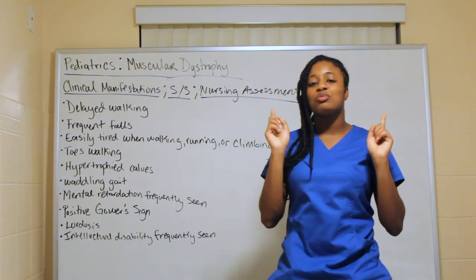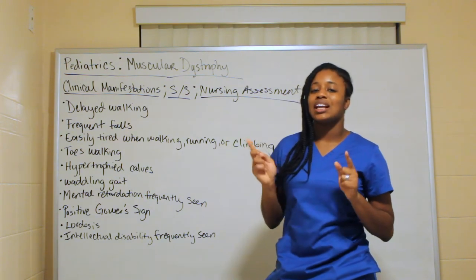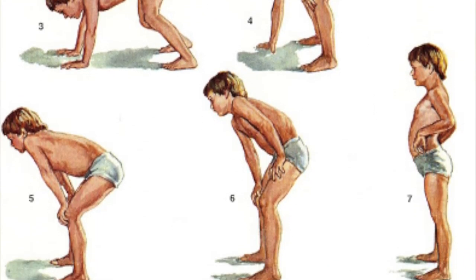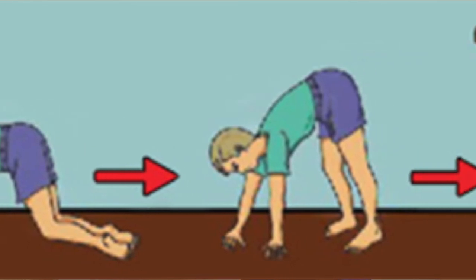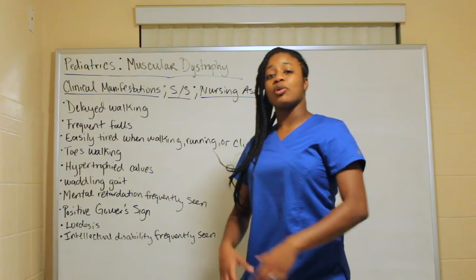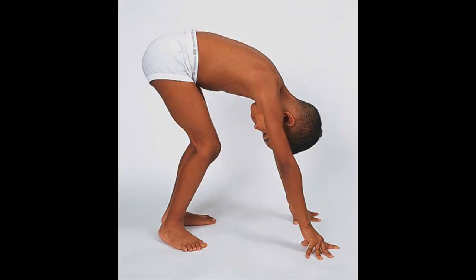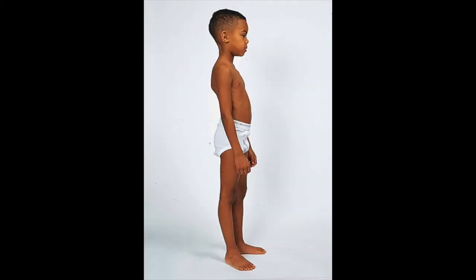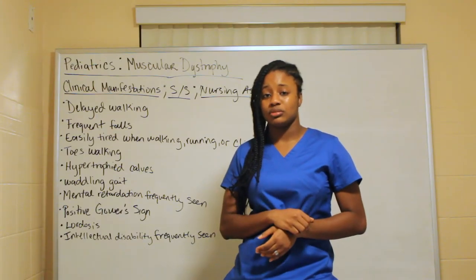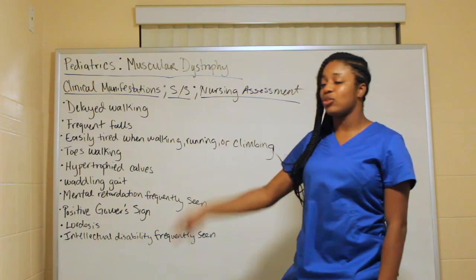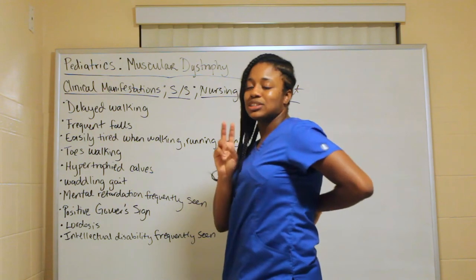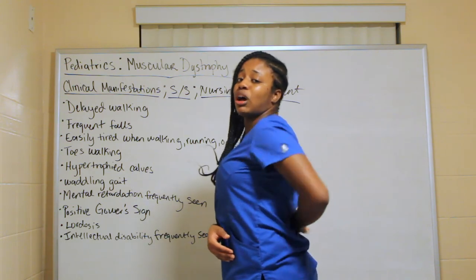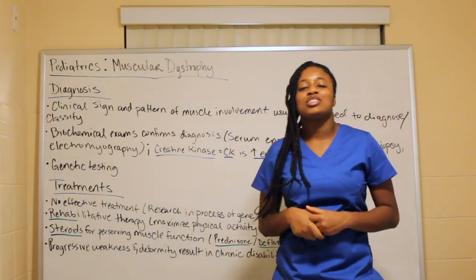You will also see a positive Gower sign — a specific way the child gets up from the floor because their muscles are weak. It's a step-by-step process. There are pictures showing exactly how they have to get up from the floor. You will also see lordosis — an exaggerated curvature of the lumbar area, or an exaggerated arch in the back.